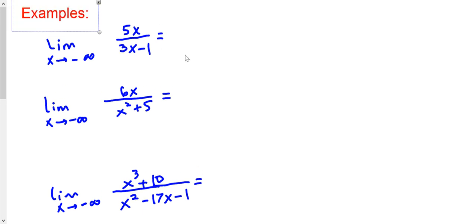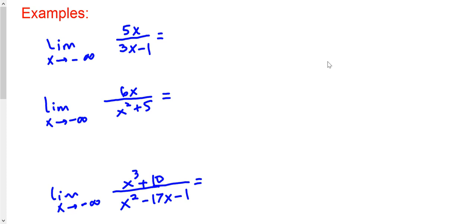Here are a few more examples about limits involving infinity. The last video was getting really long, so these examples I'd like to briefly go over, especially about limits as x goes to negative infinity. For example, what happens as x goes to negative infinity when the degree of the top equals the degree of the bottom, like 5x over 3x minus 1?